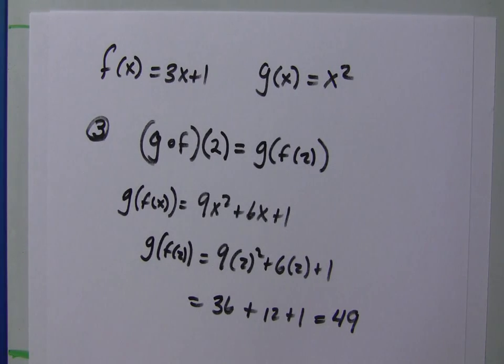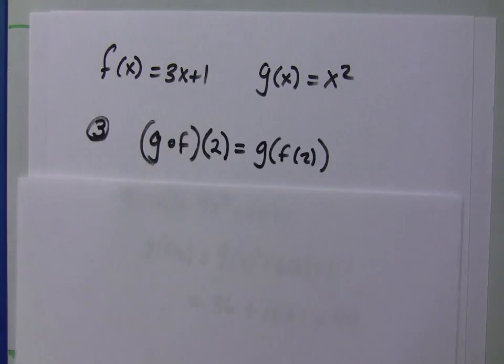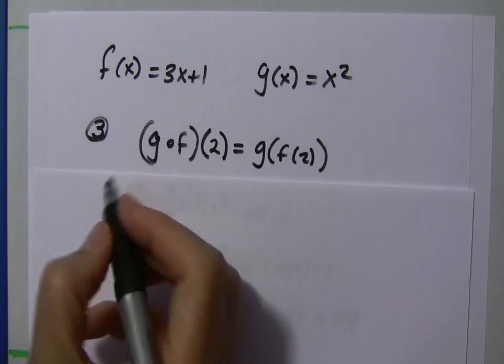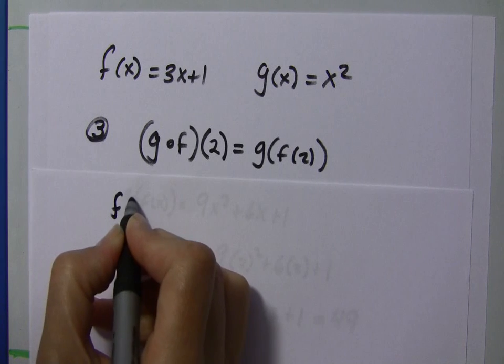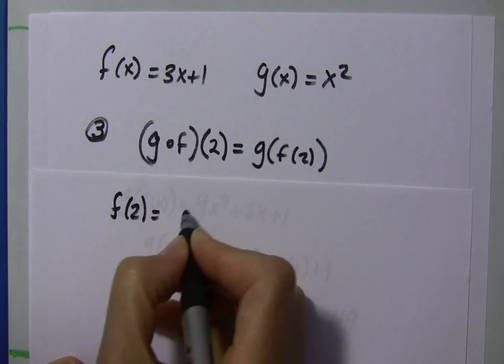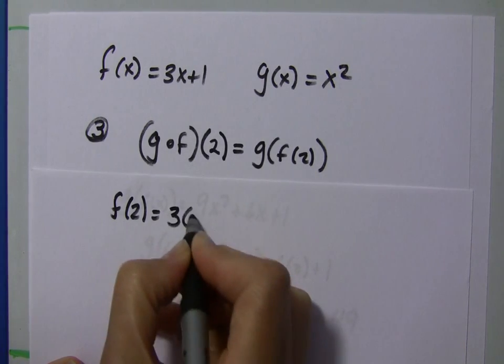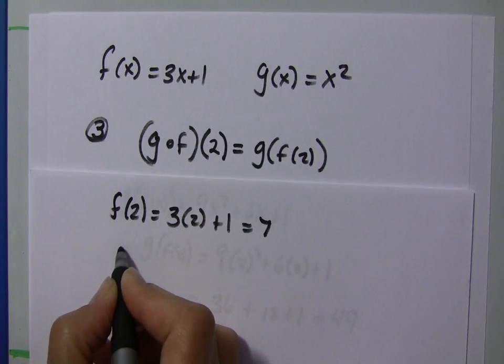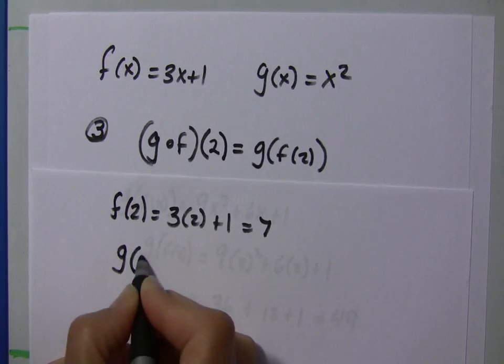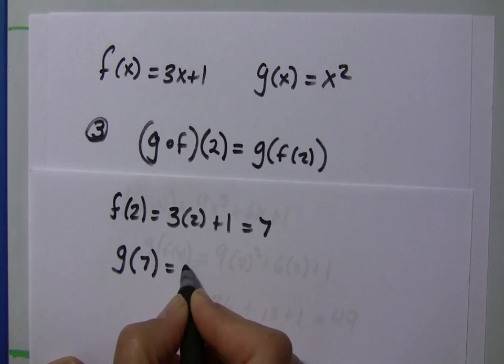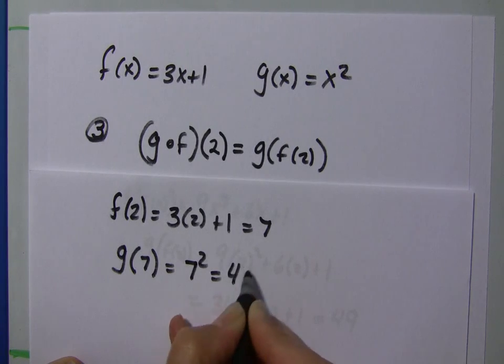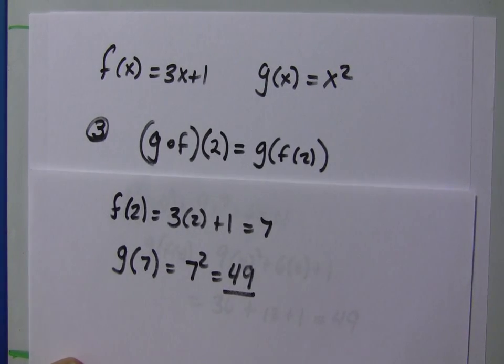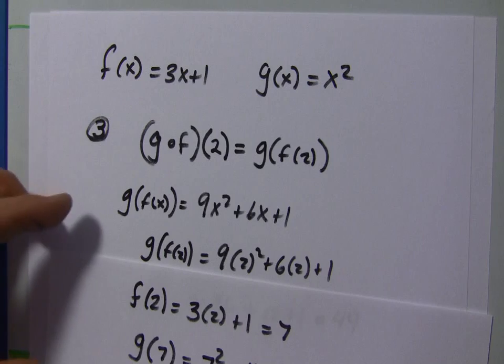This is one way we could do this. We could also break this down. We can find f of 2, which is 3 times 2 plus 1, which equals 6 plus 1 is 7. And then we could take g of 7, which is going to be 7 squared, which is 49.